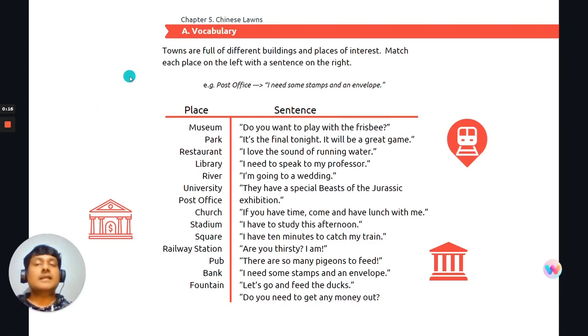The first thing we are given is vocabulary. It's A and we are given a sentence. I'm going to read through the sentence for you. So it's going to instruct you as to what to do on the slide. Towns are full of different buildings and places of interest and it says to match each place on the left with a sentence on the right.